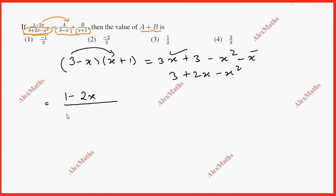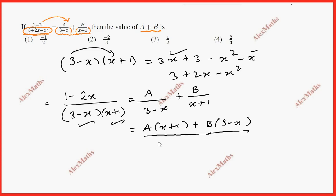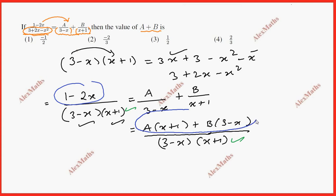So (1-2x) over (3-x) into (1 plus x plus 1) — check the sign difference. Correct answer. These are two different linear factors. We equate the numerator.